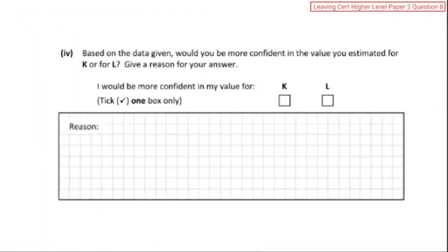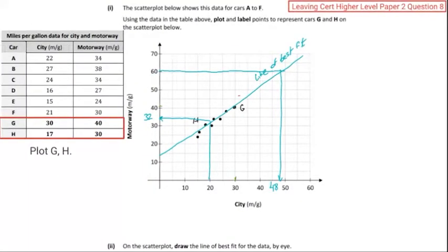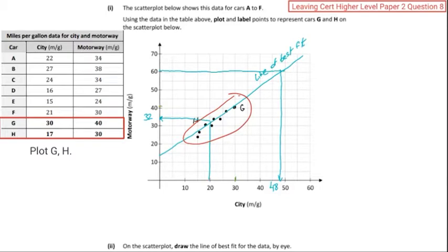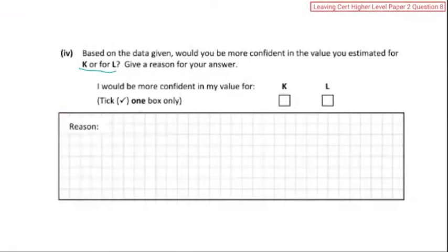Based on the data, would you be more confident in the value K or L? The one which is closer to the scatter congregation — where it's all populated — would be the best option rather than the one further out, as that would be an outlier. We can use that in the description and reasoning. We're going to use K, and the reason is that L is an outlier — it would be pretty far outside the range of the normal distribution.